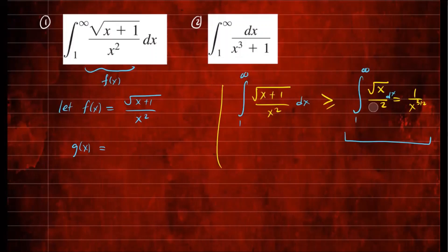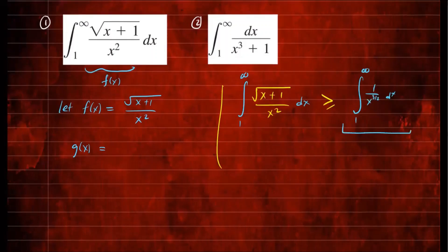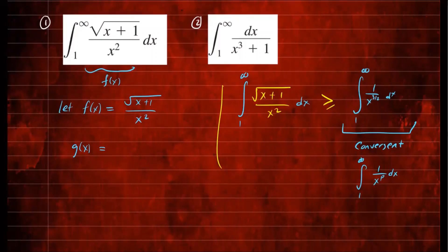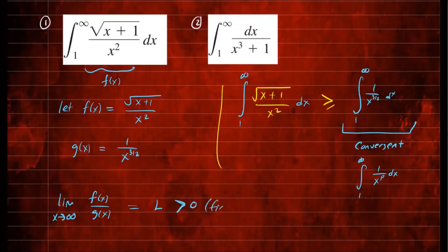Instead of using square root of x over x squared, I'm just going to use the simplified form 1 over x to the 3/2, which is easier to work with. This is a convergent integral because it's a p-integral. P-integrals are of the form from 1 to infinity of 1 over x to the p dx. If p is greater than 1 — which in our case is 3/2 — it converges; if p is less than or equal to 1, it diverges. So our function g is 1 over x to the 3/2, and we take the limit as x approaches infinity of f(x) over g(x). If this limit is some positive real number L, then the original integral also converges.